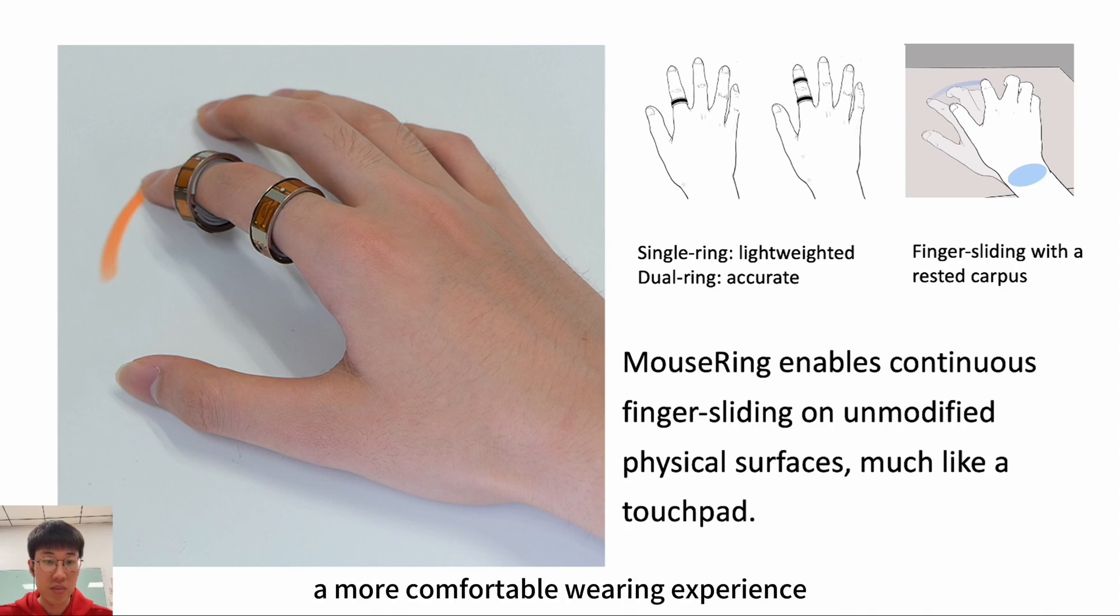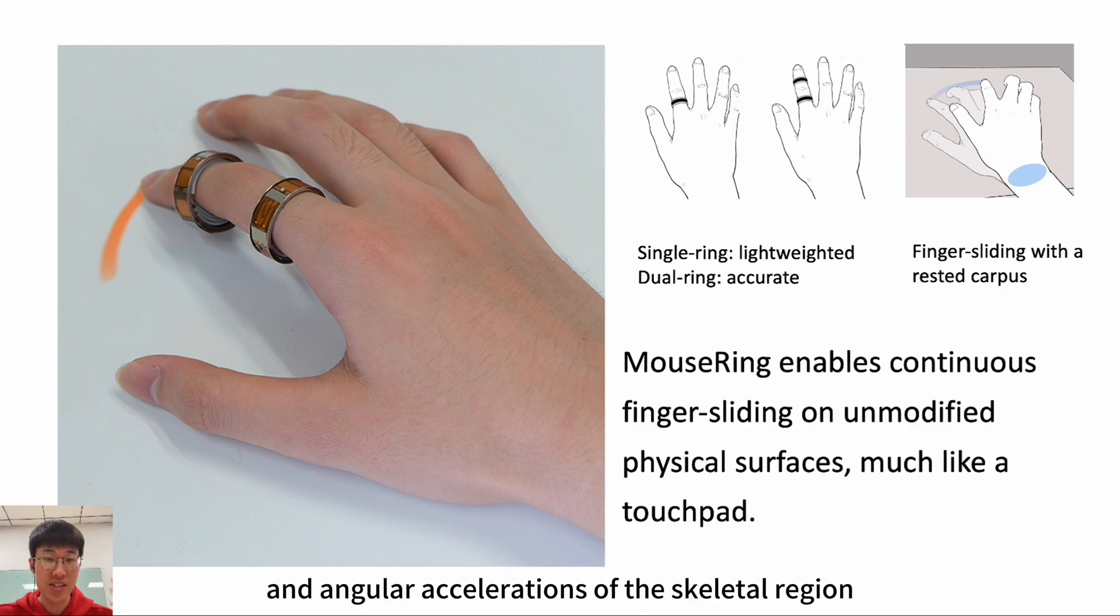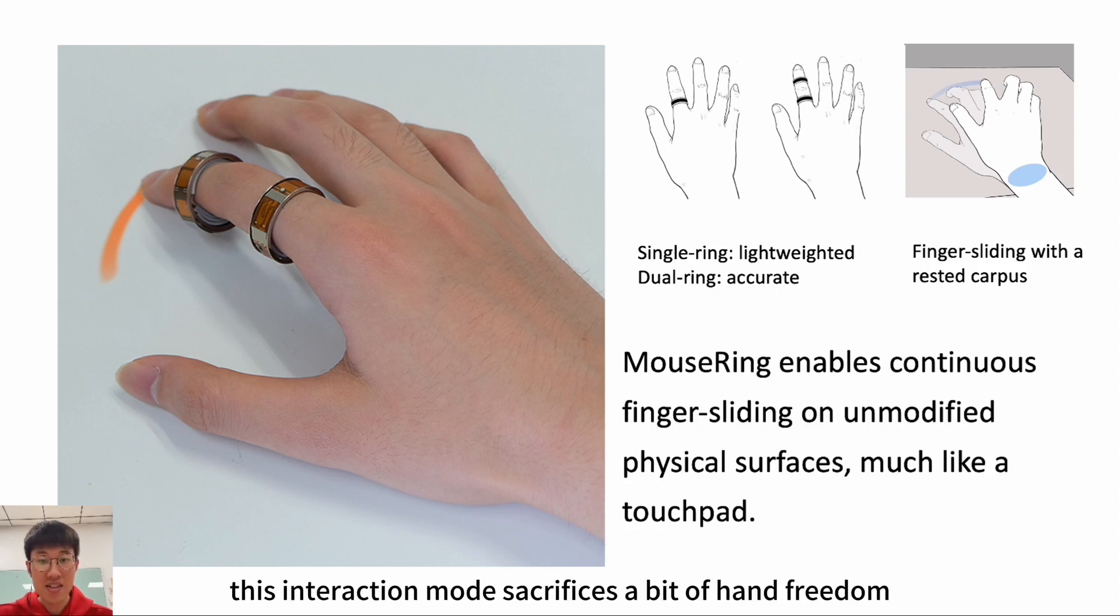The basic working principle of MouseRing is to predict finger movements by observing the accelerations and angular accelerations of the skeletal region where the rings are worn, and then establishing a relationship with the corresponding fingertip movements. Therefore, the interaction method we finally decided on requires users to rest their carpus on a flat surface during finger sliding interactions. Compared to having the whole hand suspended in the air, this interaction mode sacrifices a bit of hand freedom but provides more valuable angular velocity information.